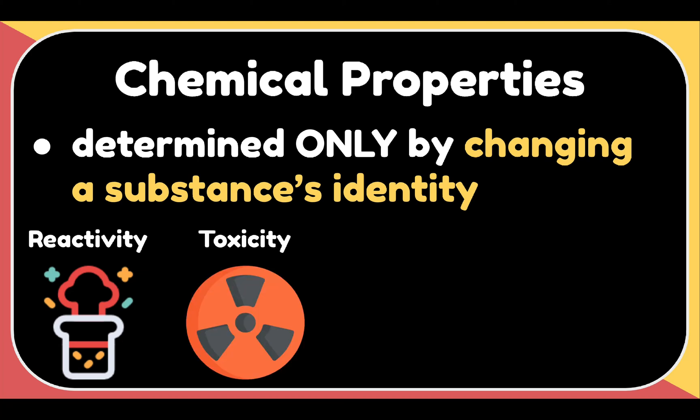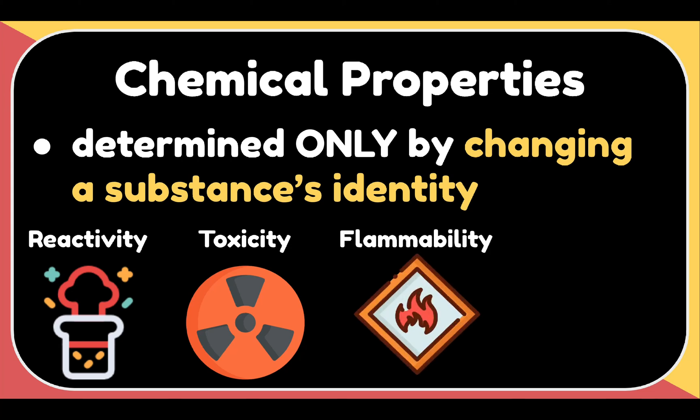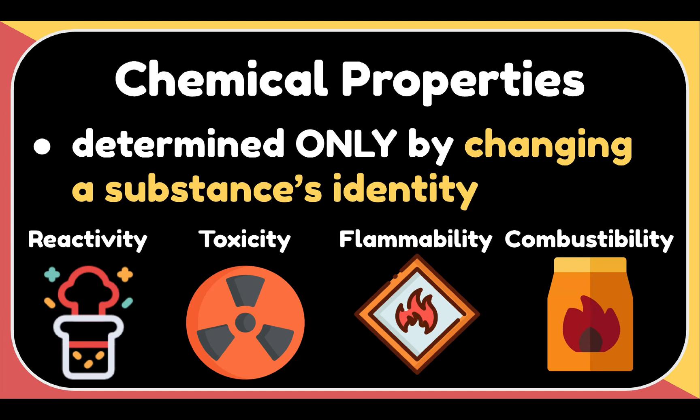We also have toxicity, or how poisonous or damaging a chemical substance may be to an organism. We also have flammability, whether a substance will burn when exposed to a flame, and combustibility, the measure of how easily a substance will burn in oxygen.